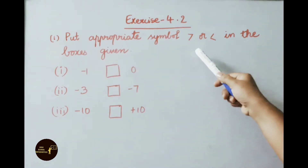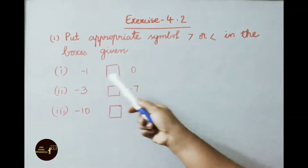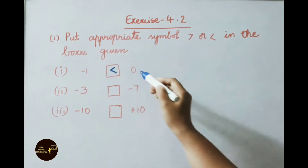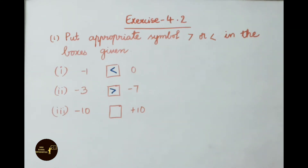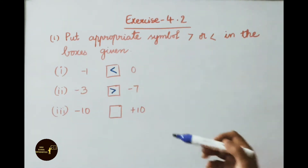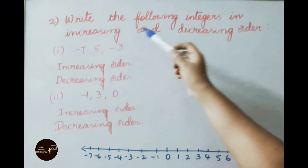Now Exercise 4.2, Question 1: Put the appropriate symbol — greater than or less than — in the boxes. First: minus 1 and 0. Negative numbers are always less than 0, therefore minus 1 is less than 0. Second: minus 3 and minus 7. Minus 3 is greater than minus 7. Third: minus 10 and plus 10. Negative numbers are always less than positive numbers, therefore minus 10 is less than plus 10.